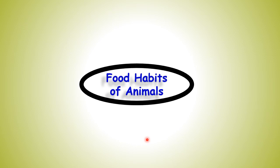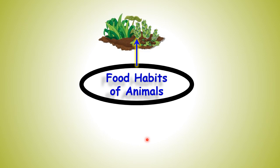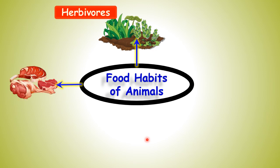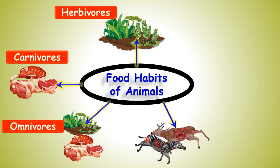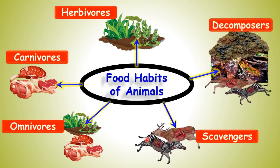In today's lesson we are going to see how animals are classified into different groups on the basis of food habits. Animals that eat only plants are known as herbivores. Animals that eat only flesh or meat are known as carnivores. Animals that eat flesh and plants both are known as omnivores. Animals that eat dead animals are known as scavengers. Organisms that feed on dead plants and animals are known as decomposers. This is the classification of animals on the basis of their food habits.